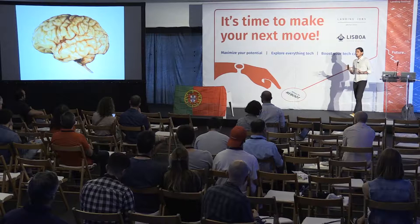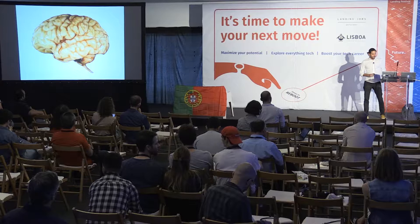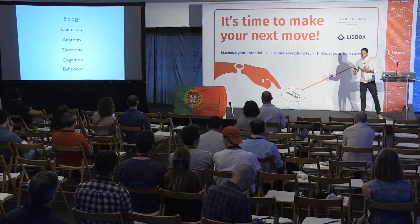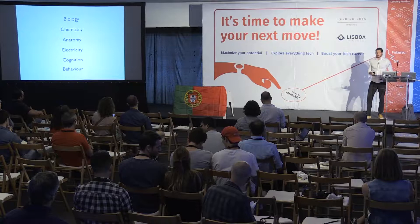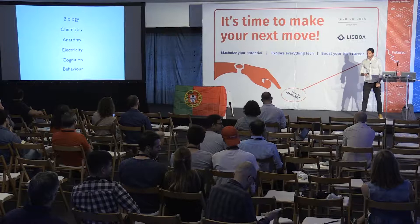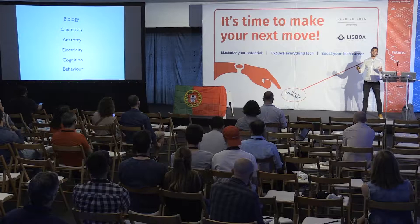This is the brain — everyone knows this fellow. Everyone has a brain. The brain is organized by layers of organization. You have the first layer, the biology layer, you have the chemistry layer, you have the anatomy layer, the electric layer — which I will talk about more during this talk — the cognition and cognitive layer, and then you have the behavioral layer, which is the last one.